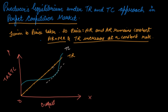When your TC curve and TR line are parallel to each other — that is, when the tangent to TC is parallel to TR — the difference between TR and TC is maximum at that point. So this is where maximum profit occurs, and this is how we find the producer's equilibrium in a perfect competition market.